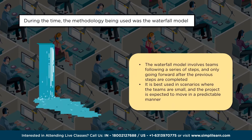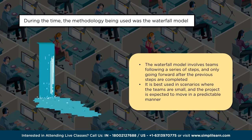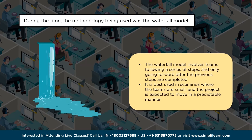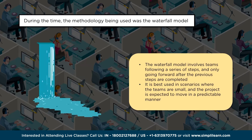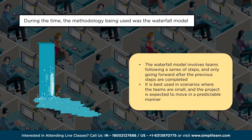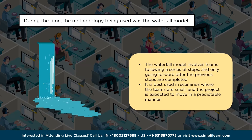In the waterfall methodology, requirements gathering and documentation happens in comprehensive detail first. Once signed off, it moves to design — based on the comprehensive requirements, a detailed design is created considering processes, products, people, and environment. Once implementation starts, if deviations are found, corrections must be made. Because the design is so detailed, deviation possibilities are minimized, but the challenge arises when market dynamics or customer requirements change mid-project.